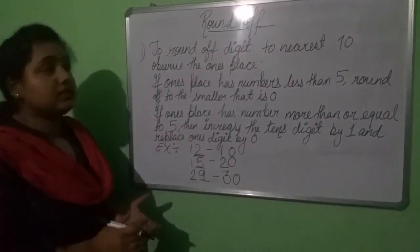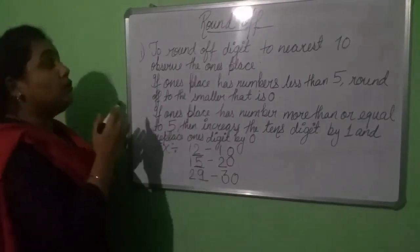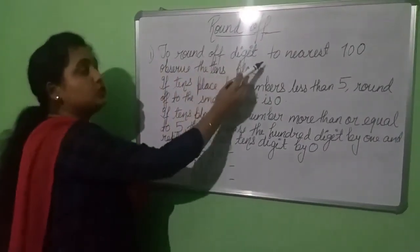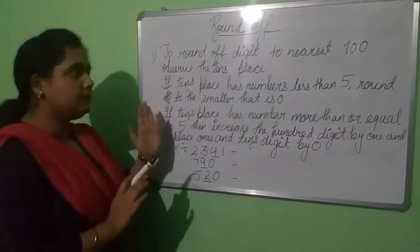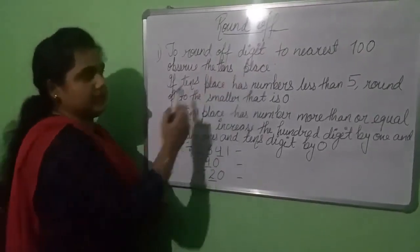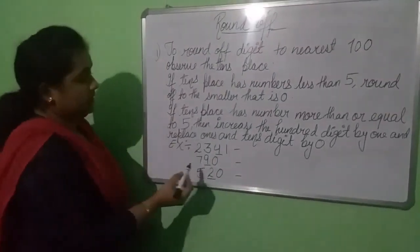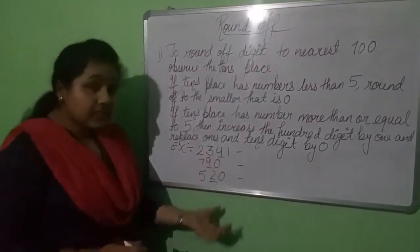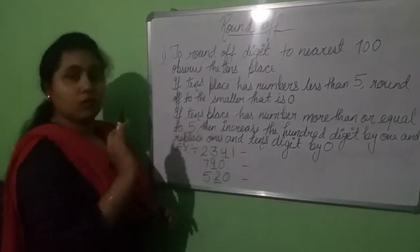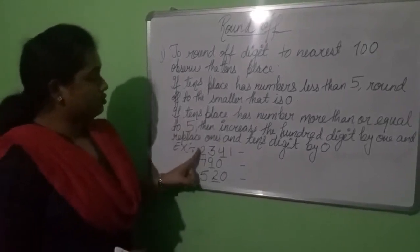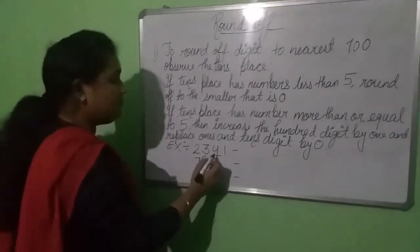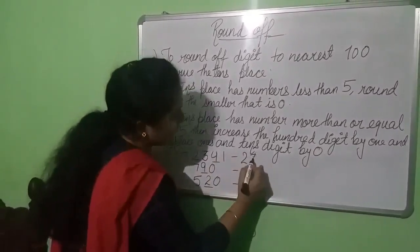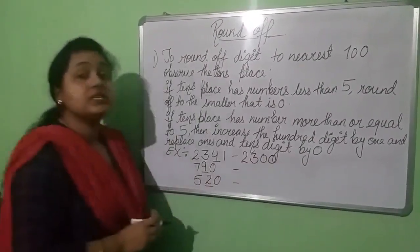Now we are going to discuss rounding a digit to the nearest 100. To round a digit to the nearest 100, we need to observe the 10's place. If the 10's place is less than 5, we are going to write 0 at both the 10's place and the 1's place. Here the number is 2341. We have 4 at the 10's place, which is less than 5, so we are going to write this number as 2300.